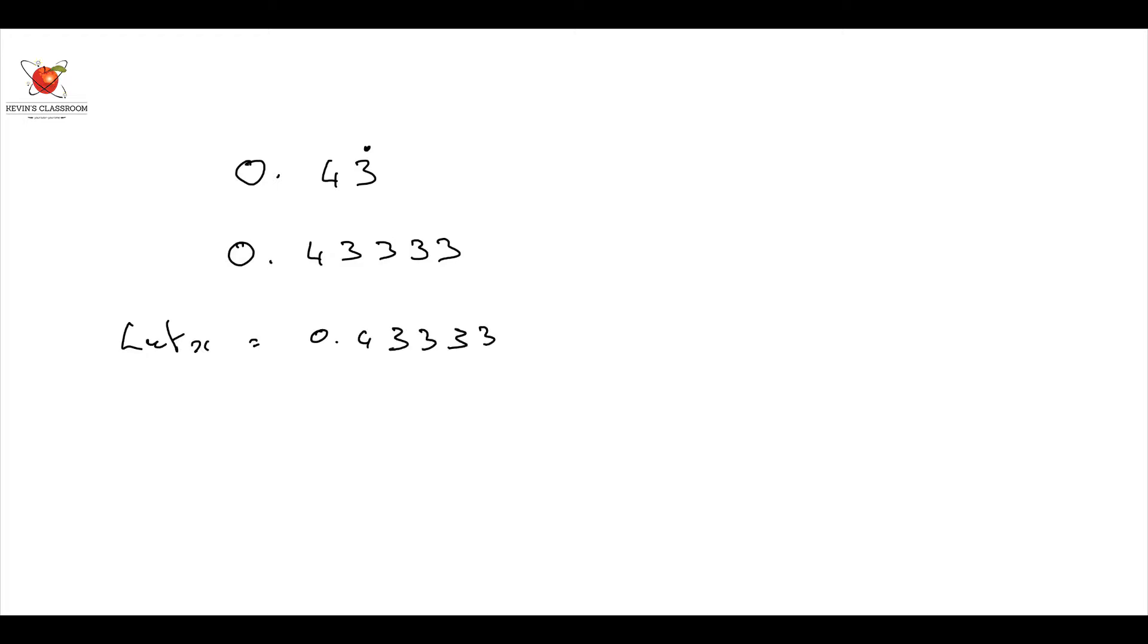Now I note where my recurring is, and I'm going to move it. Let 10x, for example. Therefore, 10x is going to be equal to, multiply it by 10, 4.33333. And therefore, 100x is going to be equal to 43.33333, and it keeps going.